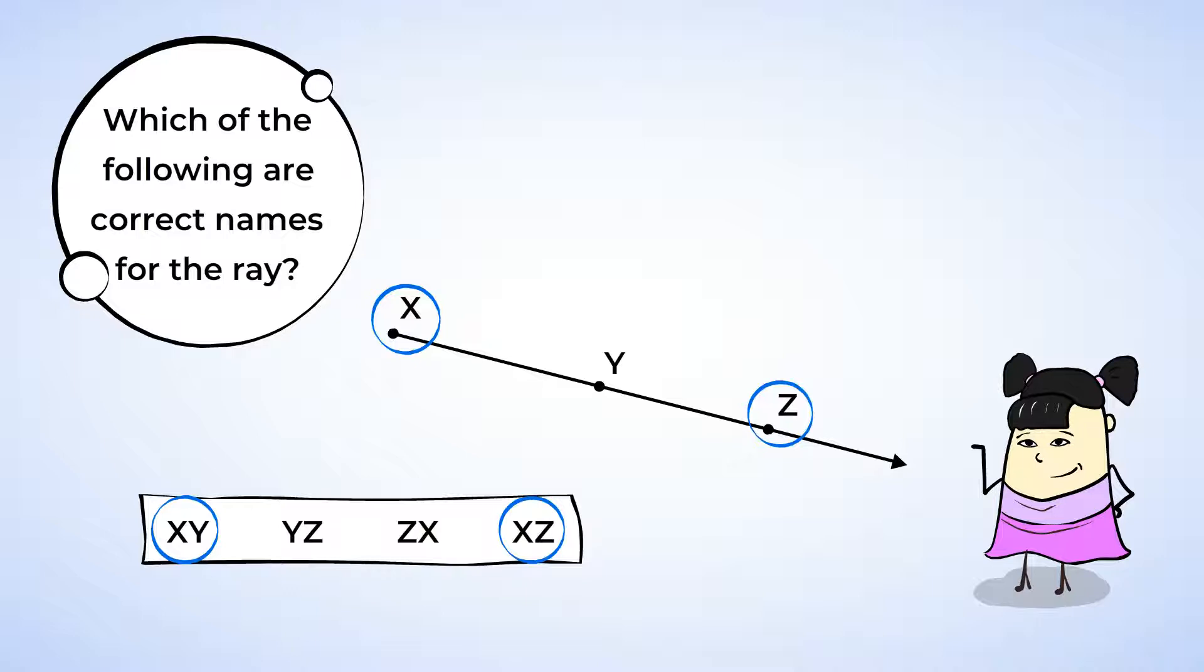Let's look at the other two options to see why they're not correct. YZ is not correct because Y is not the endpoint. And ZX uses the same letters as one of our correct answers, but it's in the wrong order. The first letter should always be the endpoint. Great job naming those rays.